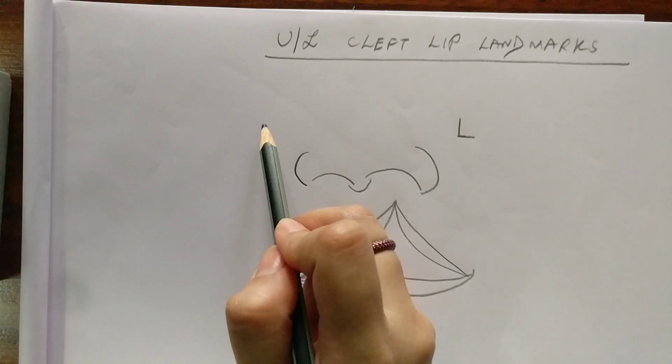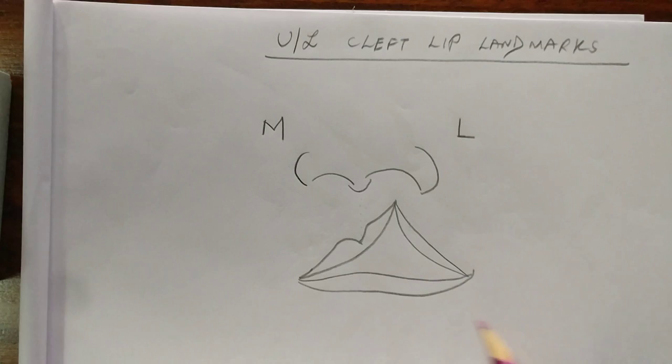Now the cleft side is also known as the lateral side, hence L, and the non-cleft side is also known as the medial side, hence M.